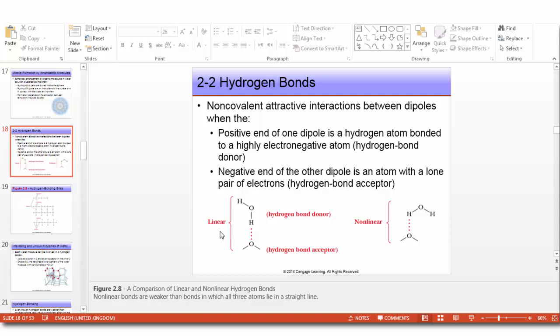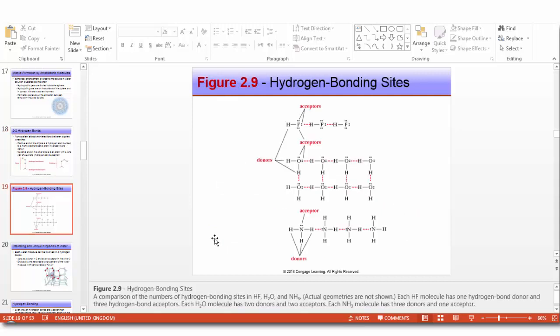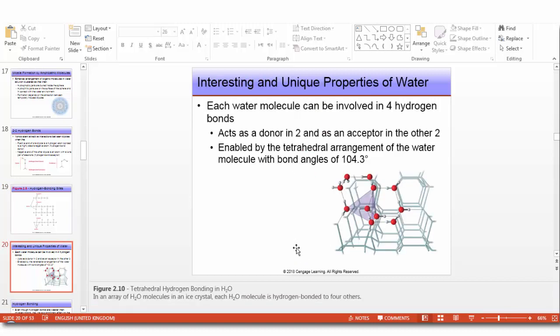Why does water have such interesting and unique properties? If we consider the hydrogen bonding sites in three molecules - HF, water, and NH3 - each HF molecule has one hydrogen bond donor and three hydrogen bond acceptors. Each water molecule has two donors and two acceptors. Each ammonia molecule has three donors and one acceptor. Each water molecule can be involved in four hydrogen bonds.